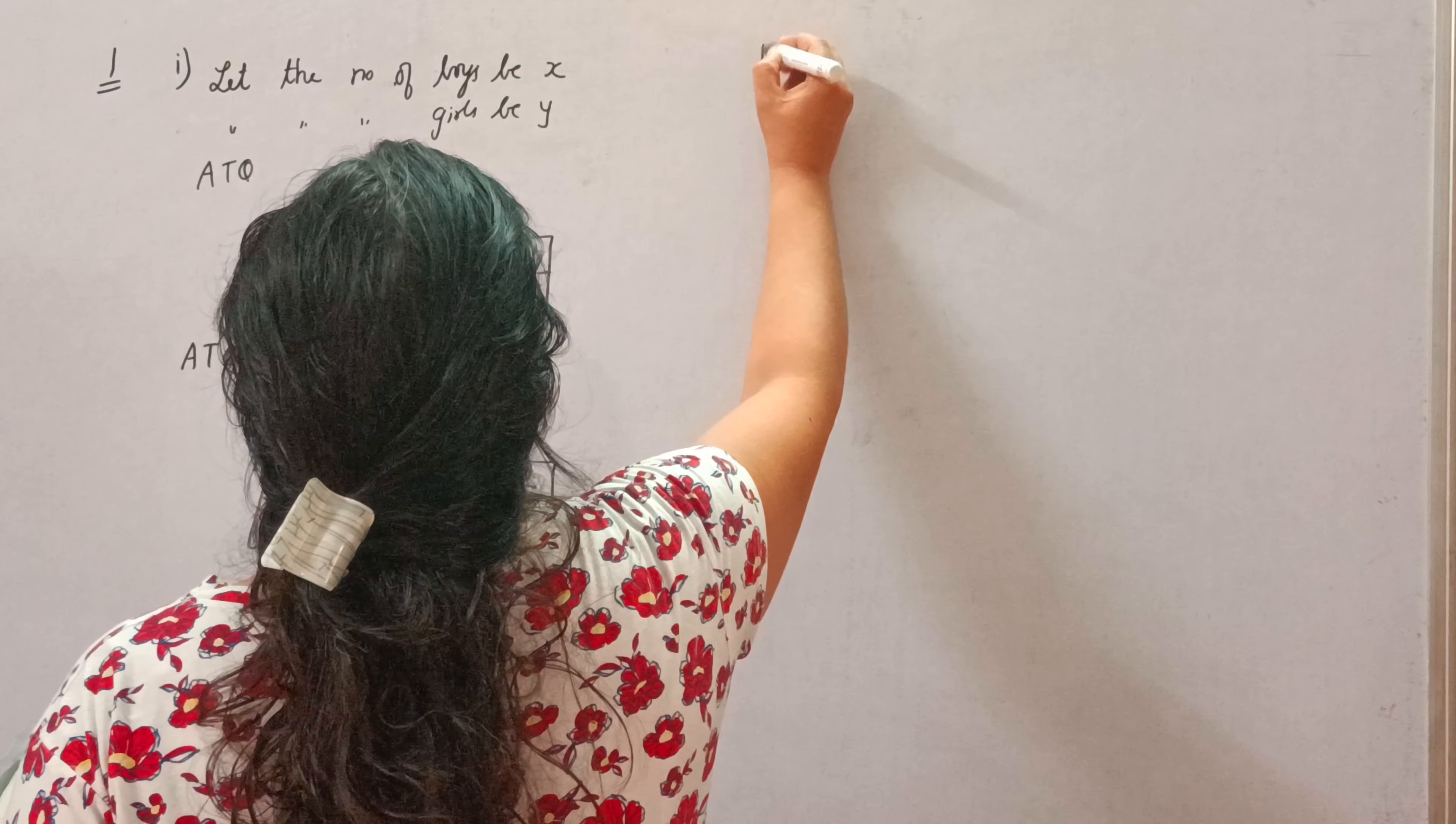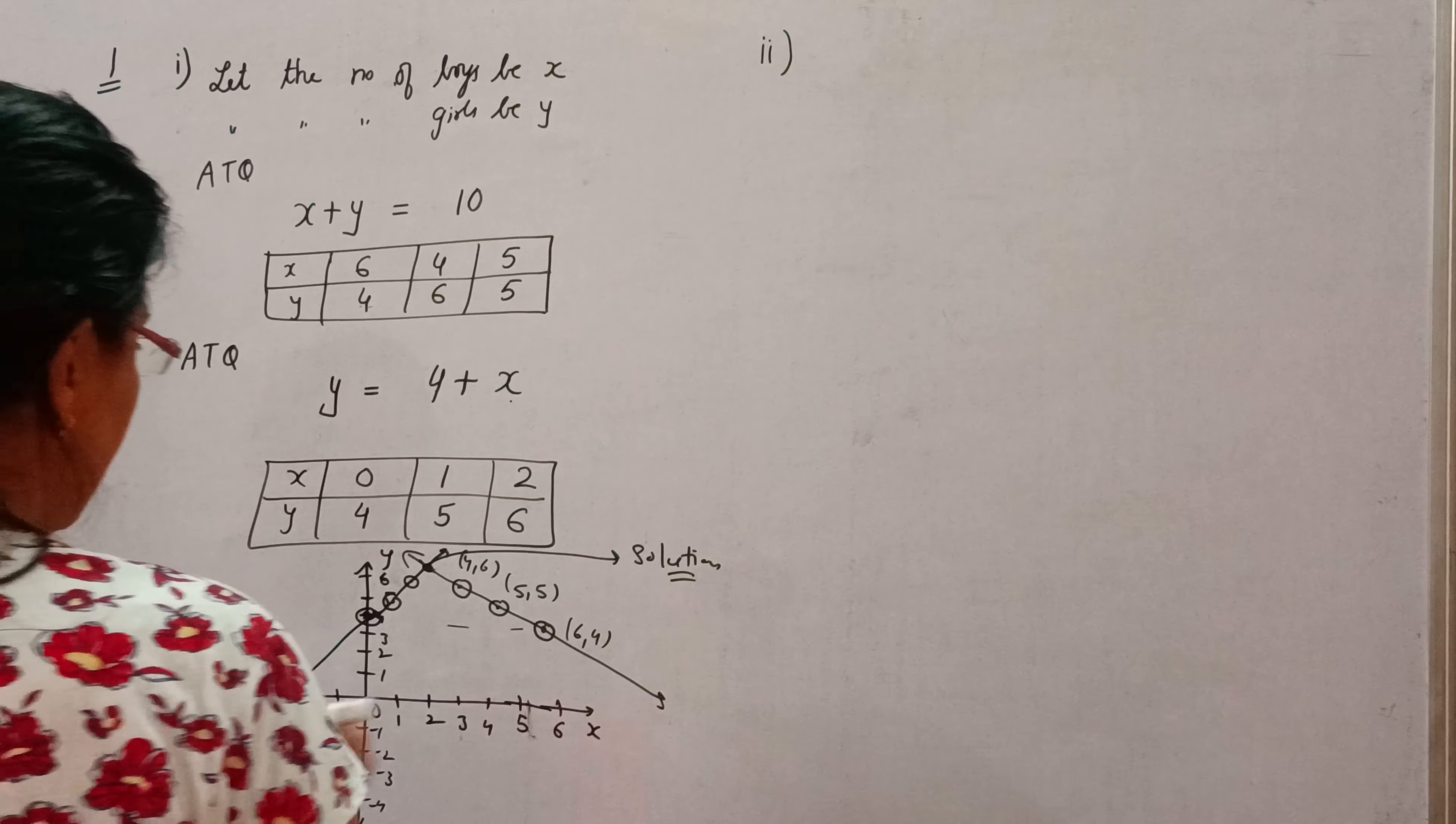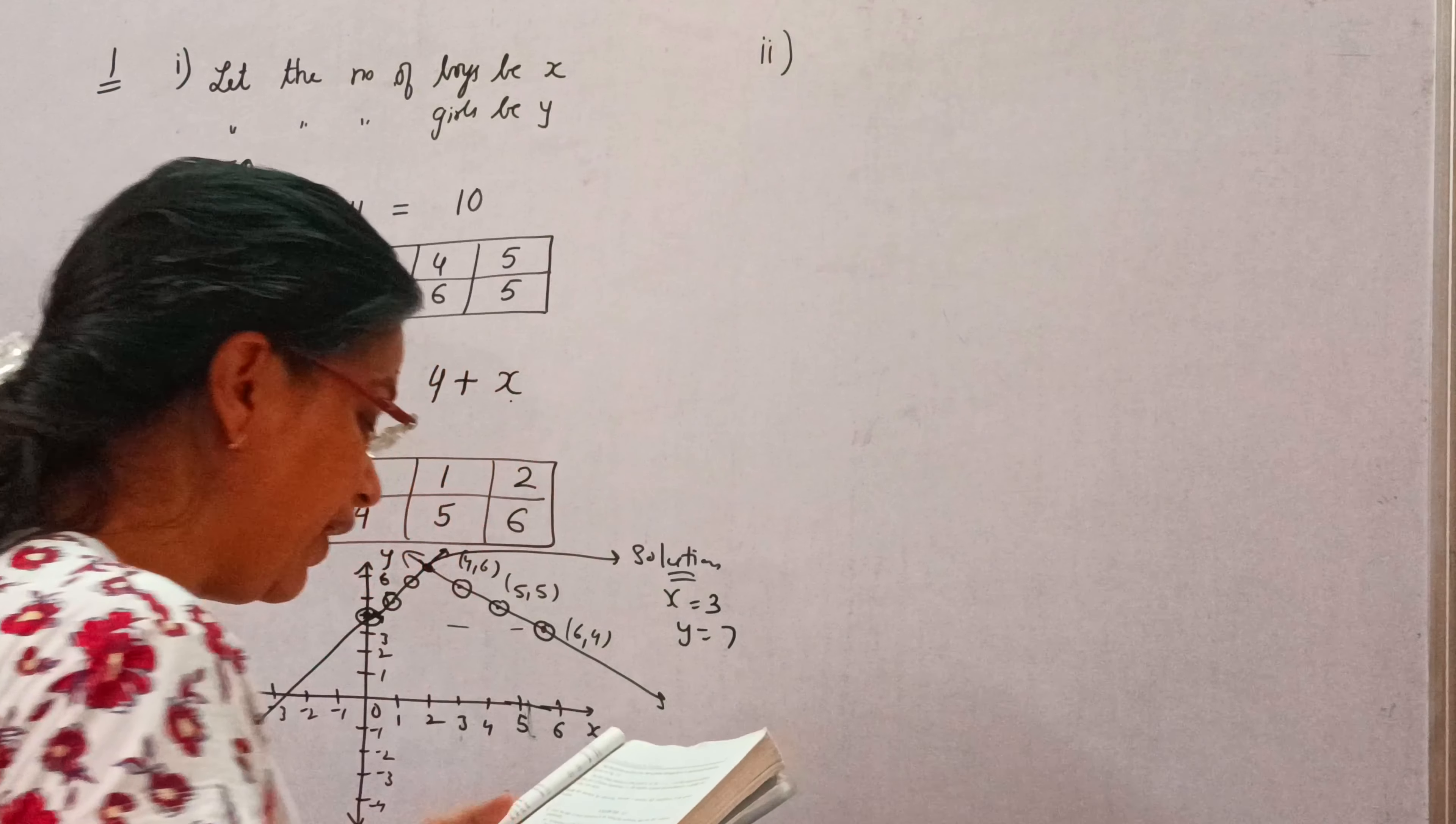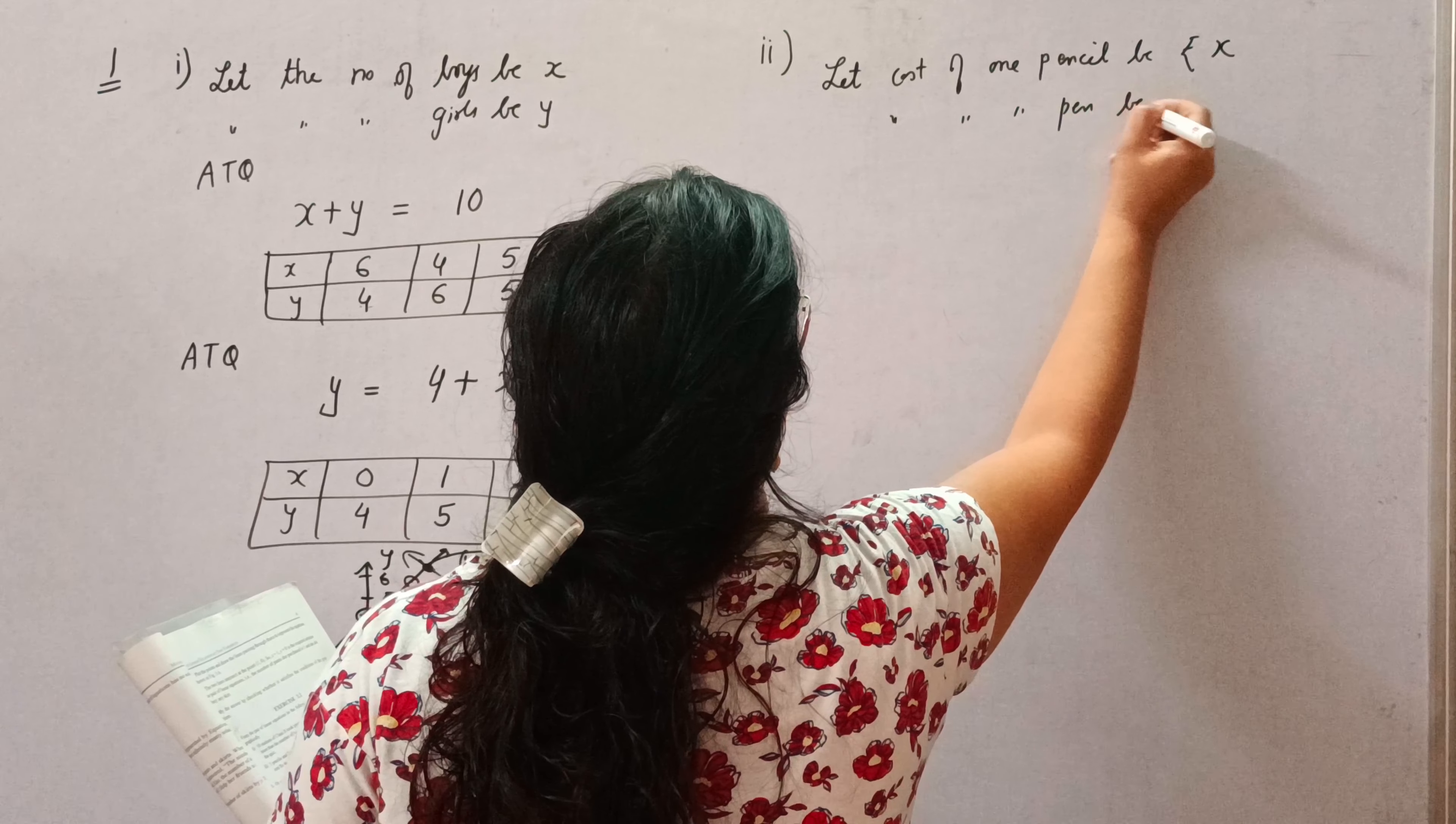Now, second. In the same way, we will do part number 2. 5 pencils and 7 pens together cost rupees 50. Whereas, 7 pencils and 5 pens together cost rupees 46. Find the cost of 1 pencil and 1 pen.